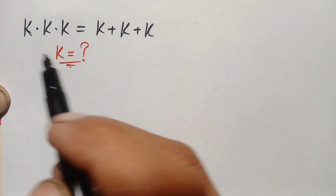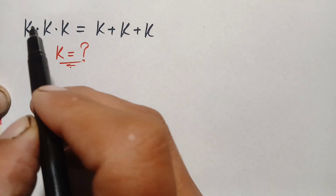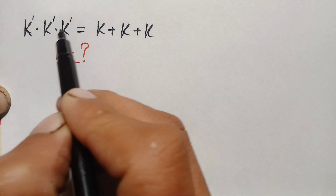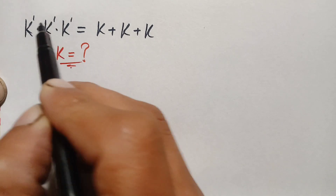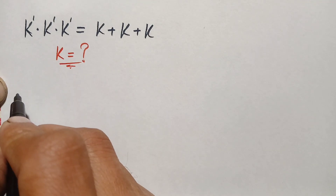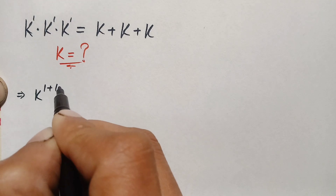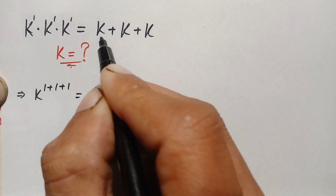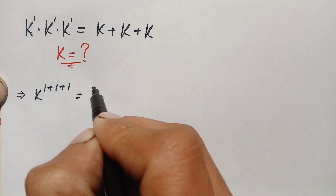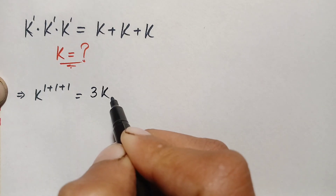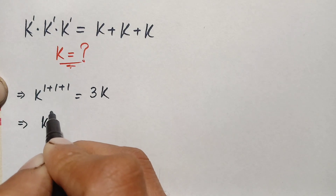On the left hand side, all the bases are the same variable with power one. Using the same-base exponential identity, when the base is the same we write the base once and add the powers. So k×k×k becomes k to the power of one plus one plus one, which equals k cubed. On the right side, k added three times with coefficient one gives us 3k.